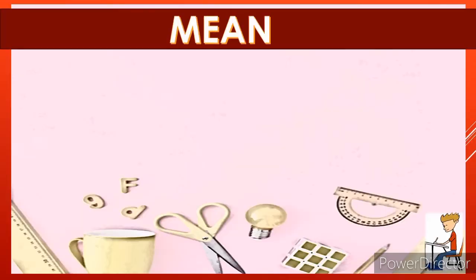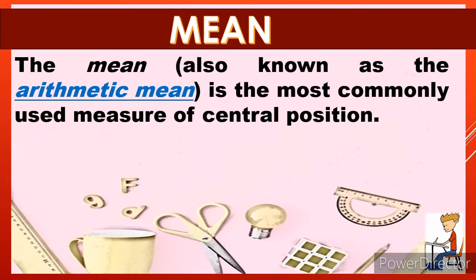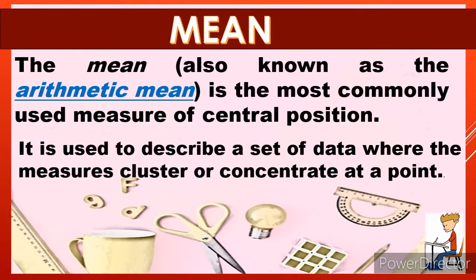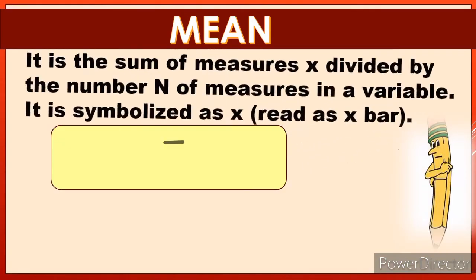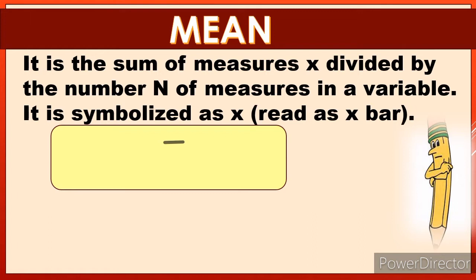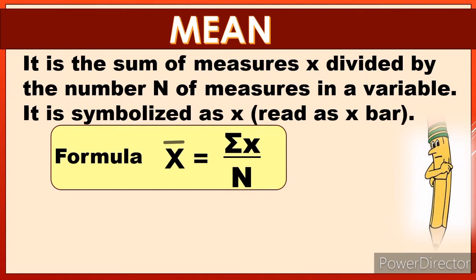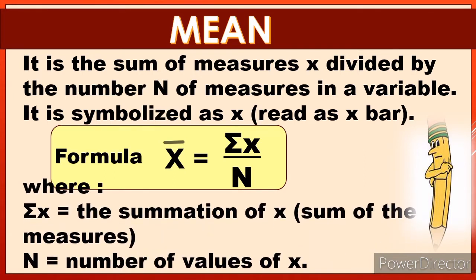First, we have the mean. What is mean? The mean is also known as the arithmetic mean. It is the most commonly used measure of central position, and it is used to describe a set of data where the measures cluster or concentrate at a point. As the measures cluster around each other, a single value appears to represent distinctively the typical value. It is the sum of the measures of x divided by the number n of measures in a variable. In symbol, read as x-bar, the formula is: x-bar equals the summation of x over n, where summation of x is the sum of the measures and n is the number of values of x.